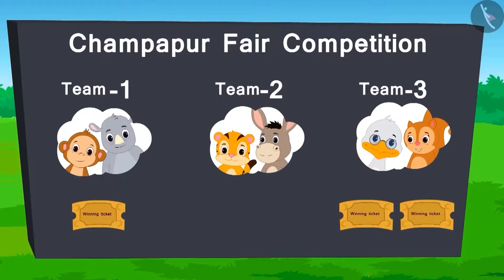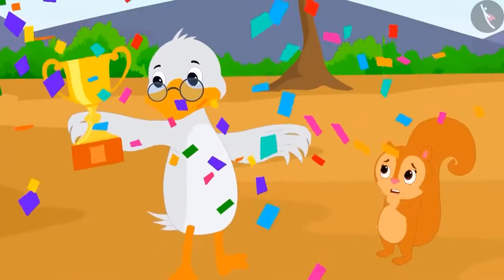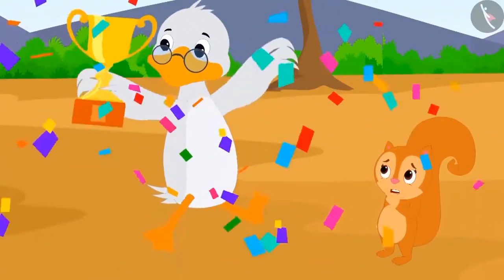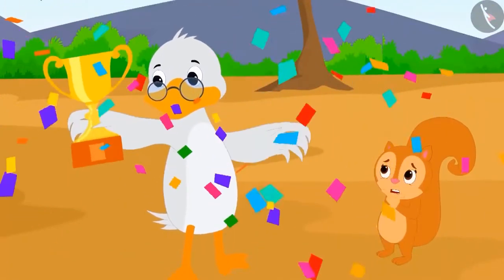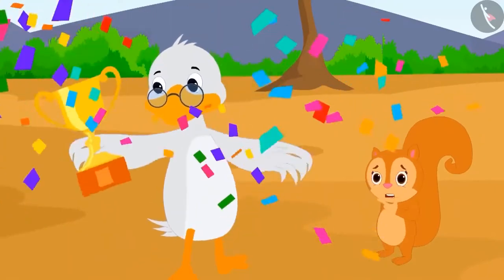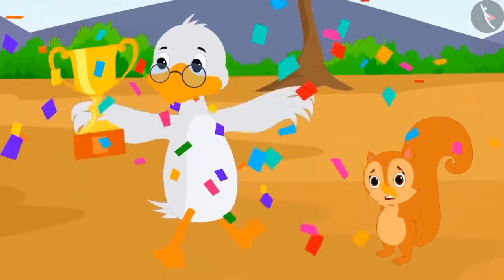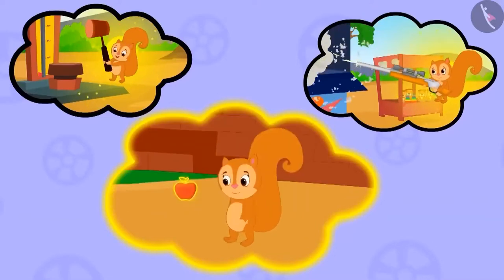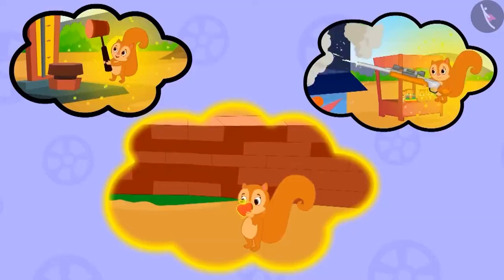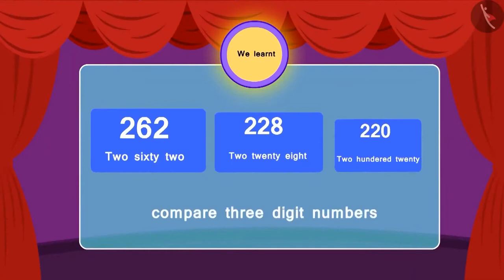In the end, team 3 wins the fair competition with two tickets. Badbole Badak uncle started dancing with joy, but Chanda was surprised — she doesn't remember anything and is wondering how she managed to do all this. Maybe she has forgotten everything because of the magical fruit? So children, in this lesson, we learnt to compare three digit numbers.